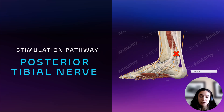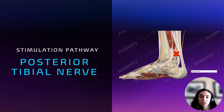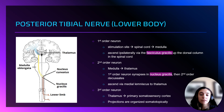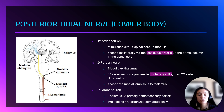The posterior tibial nerve is responsible for transmitting sensory information from the lower extremities. Its stimulation site is located near the ankle and the Achilles tendon, with the anode placed three centimeters distal to the cathode. Stimulation at the ankle activates the first order neuron, which carries the signal to the spinal cord. It ascends ipsilaterally via the fasciculus gracilis in the dorsal column and synapses in the nucleus gracilis at the medulla. The second order neuron then crosses over and travels through the medial lemniscus to reach the thalamus, and the third order neuron transmits the signal to the primary somatosensory cortex, completing the sensory pathway. This pathway is important for detecting sensory function in lower limb surgeries such as spinal cord procedures.